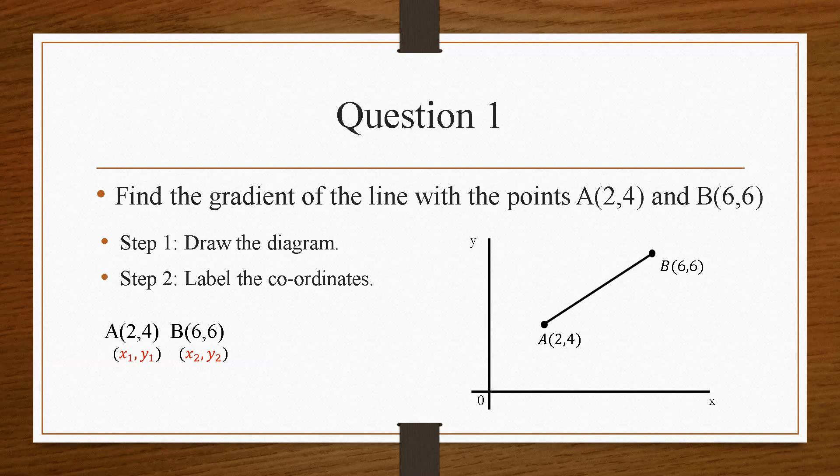And then the second step is to write down the coordinates, and then label them x1, y1, and x2, y2. Now it doesn't matter which one is the ones, and which one is the twos. The thing that is important is the consistency. And that's why I always say, label the points, and that way you don't get them messed up.